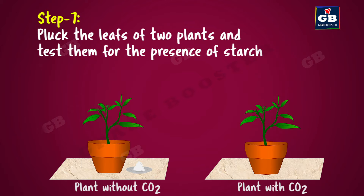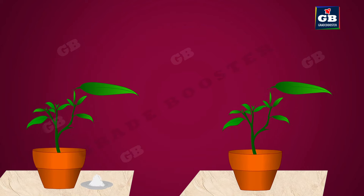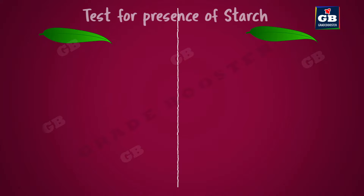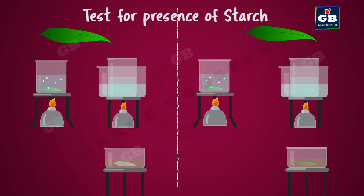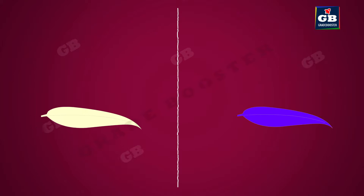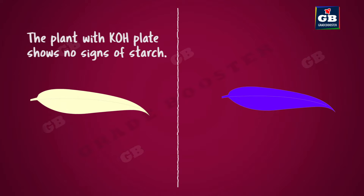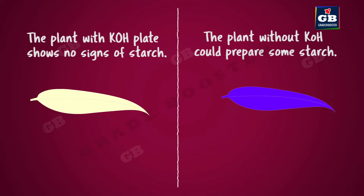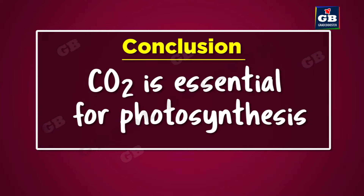Pluck a leaf from each plant and test them for the presence of starch. Do both leaves show the same amount of starch? No — the plant with the KOH plate shows no sign of starch, but the plant without potassium hydroxide could prepare some starch. By this experiment, we can conclude that carbon dioxide is essential for photosynthesis.